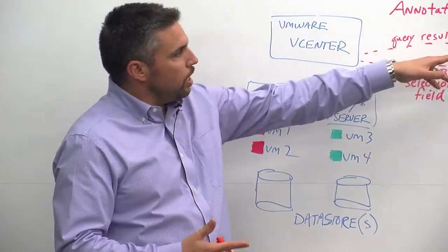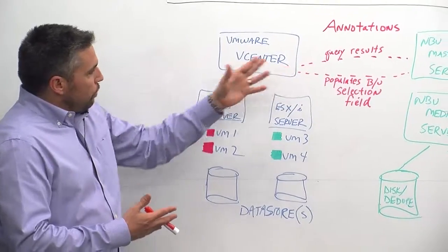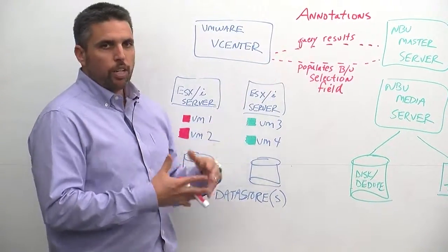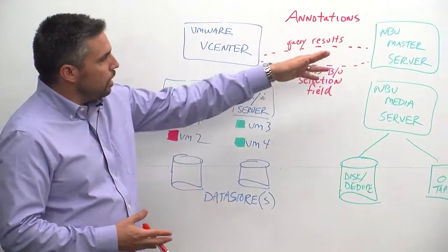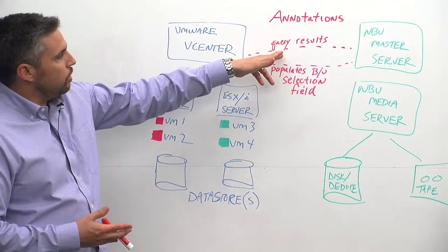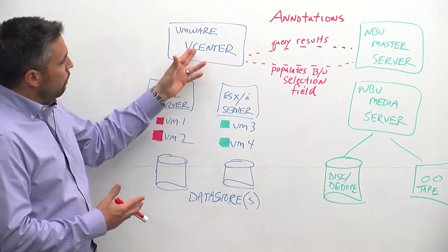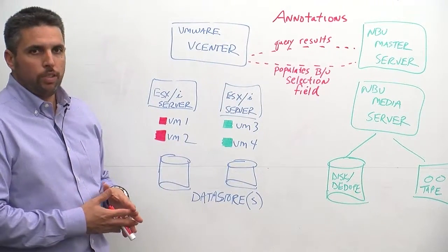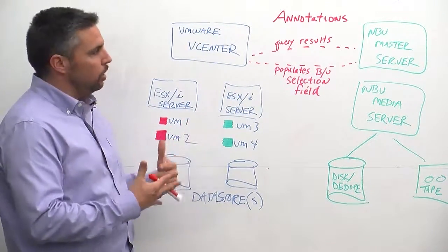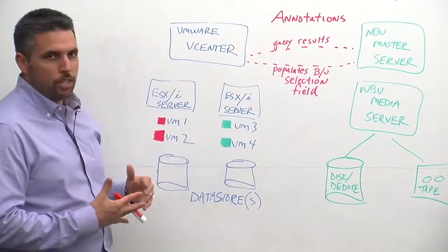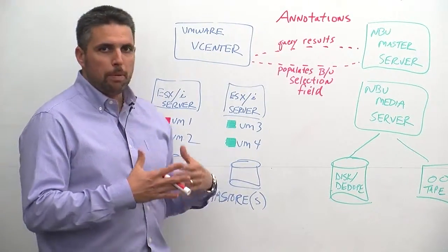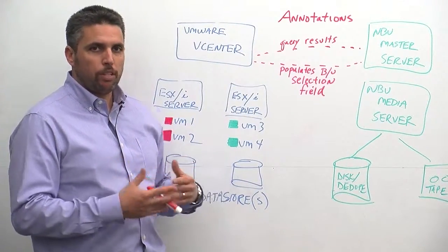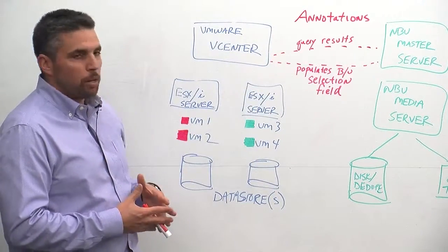The way the queries work is the NetBackup server, you provide the credentials to communicate with vCenter, right? So you define those credentials in the NetBackup administration console. NetBackup communicates to vCenter to determine the query results. vCenter returns the results of those queries and populates the Backup selection field. And you can adjust the threshold when NetBackup communicates to vCenter. So if you have a very busy VMware environment, maybe you want this communication to happen every eight hours or maybe every single day, you can adjust that threshold.